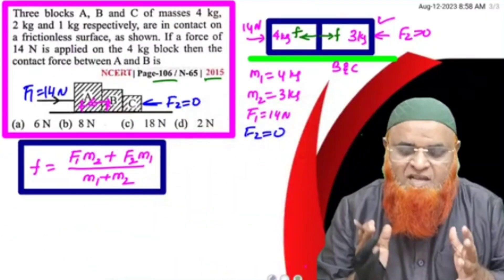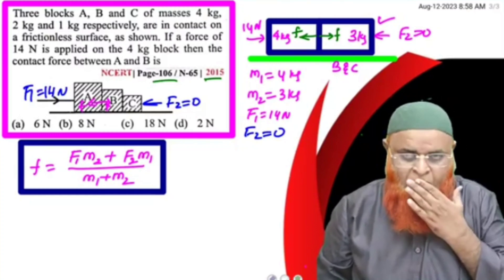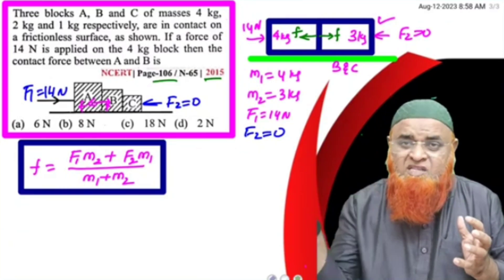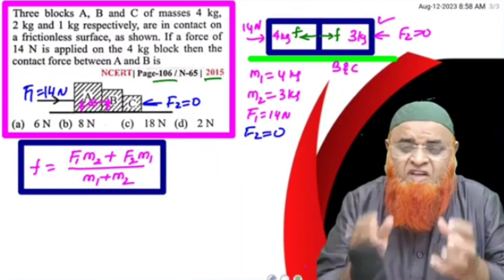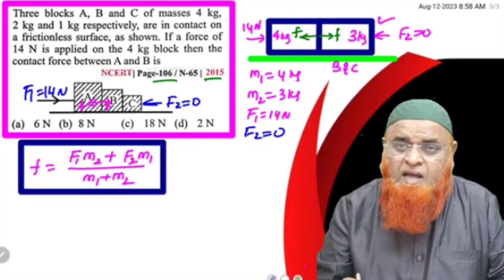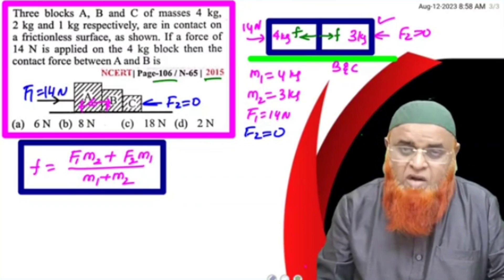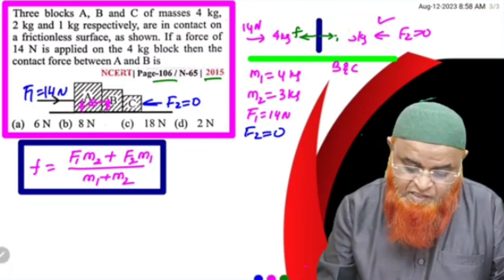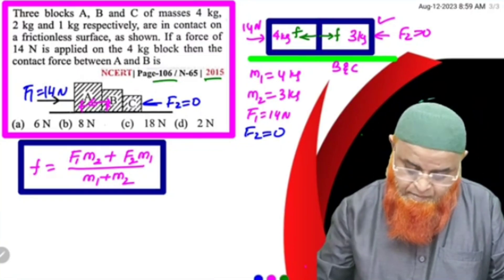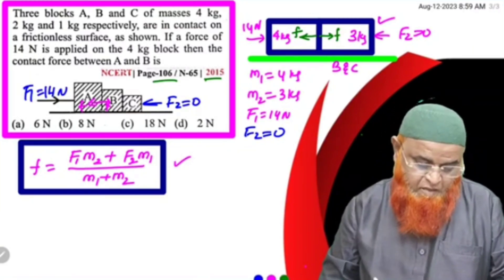This next problem was asked in the 2015 NEET exam and the concept is from NCERT page 106. The problem asks for the contact force between blocks A and B when a force of 14 newtons is applied. Blocks B and C are combined as 3 kg. The contact force (small f) is found using a shortcut formula.